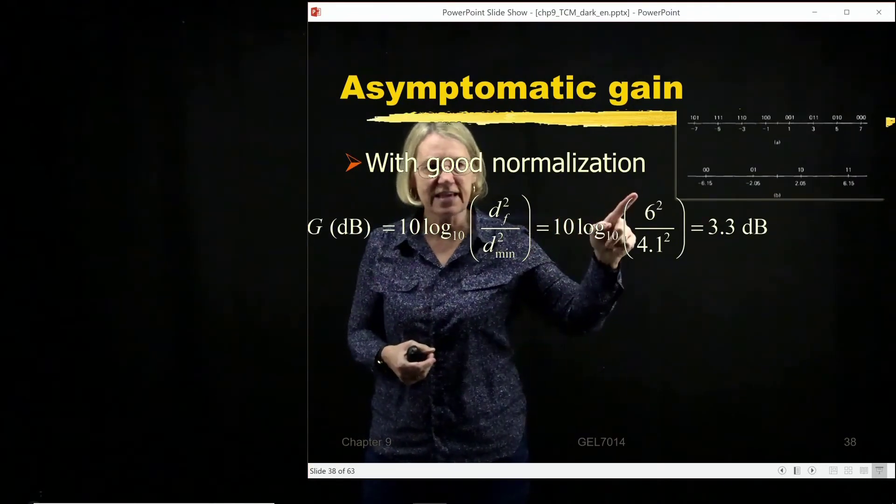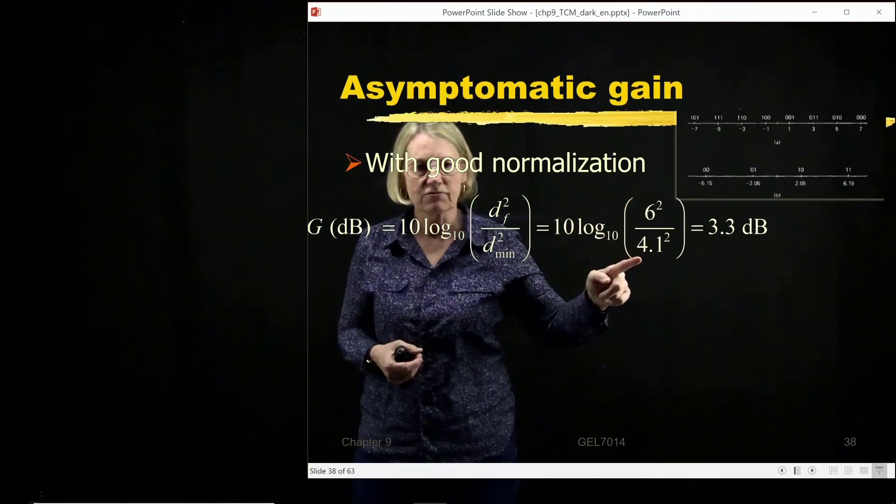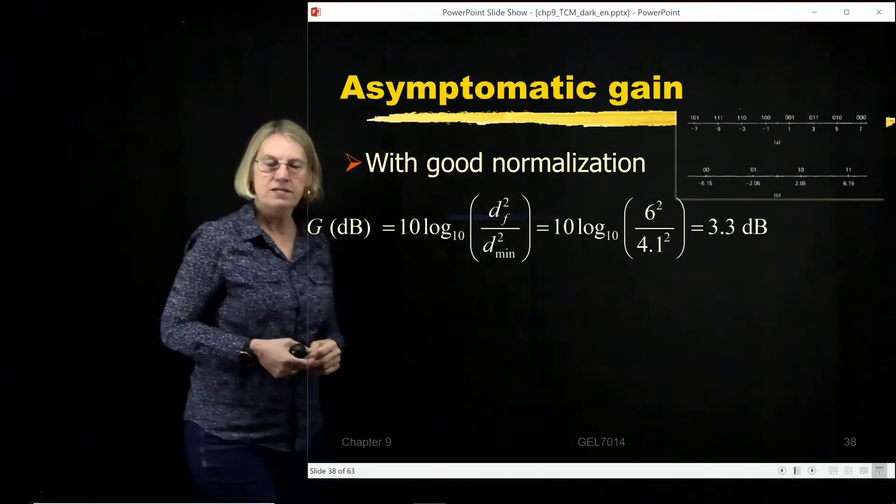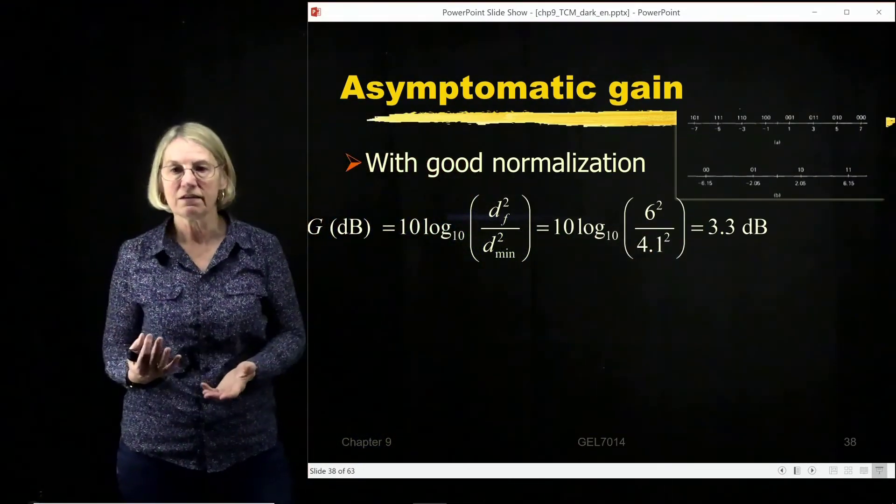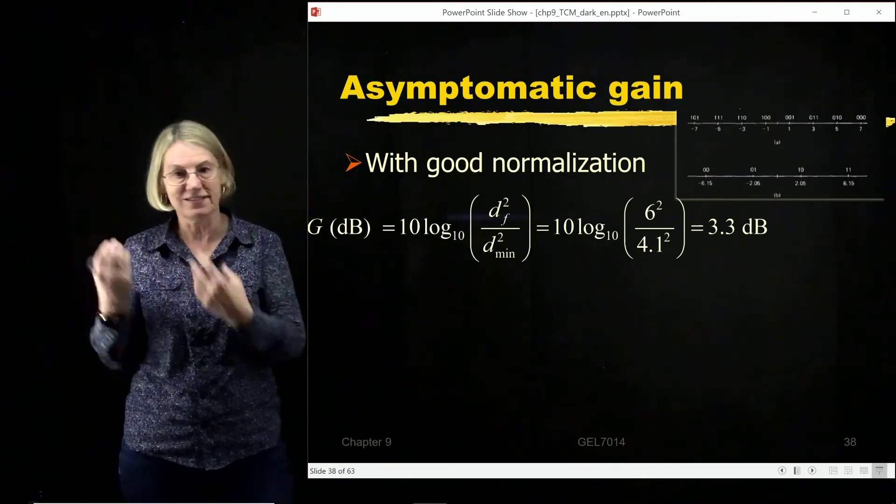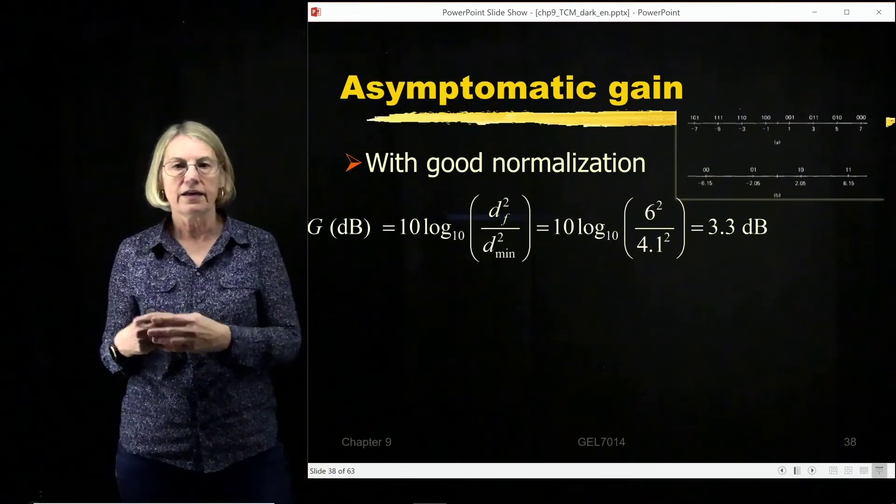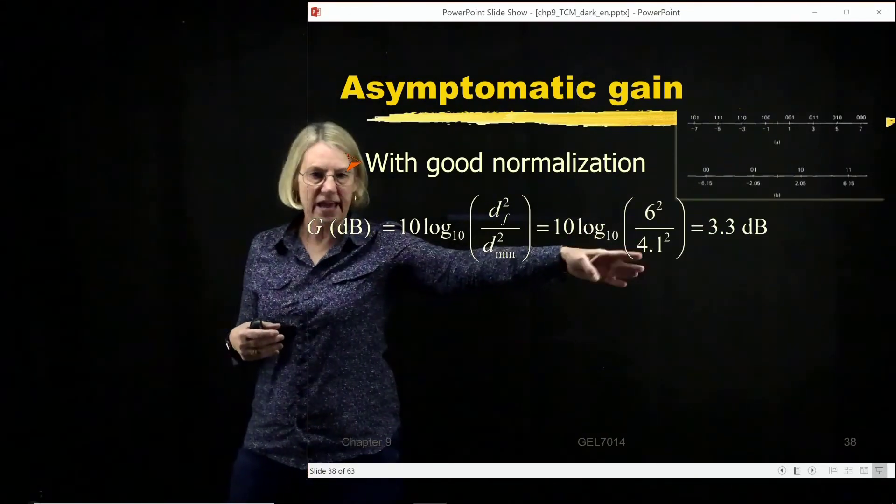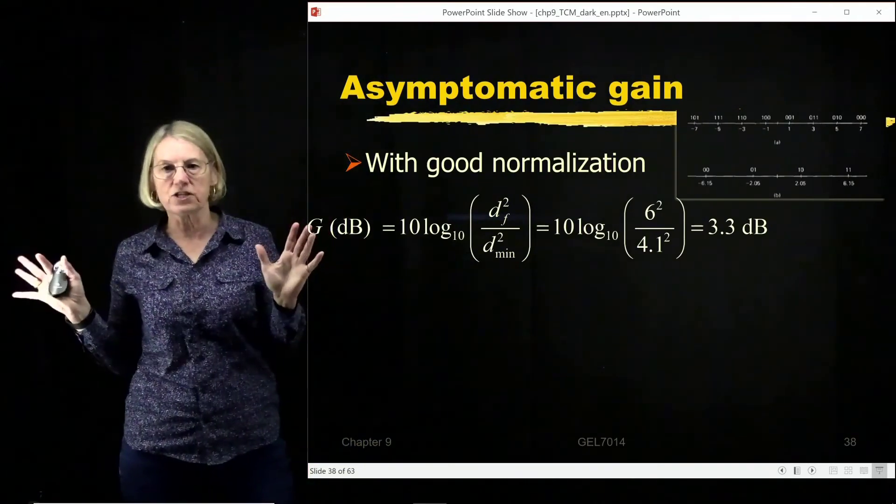And in this case, it would be 36 over 4.1 squared, and that comes out to 3.3 dB. So we have 3 dB gain, and given the complexity of having a trellis decoder and a four-state trellis decoder, I get this gain in exchange with no expansion in bandwidth.